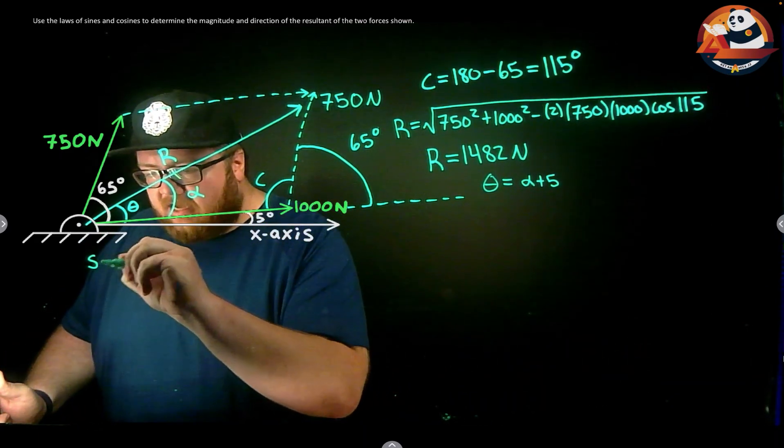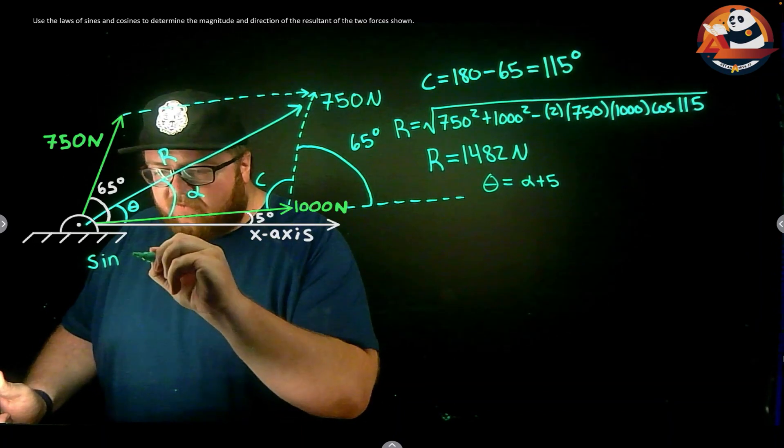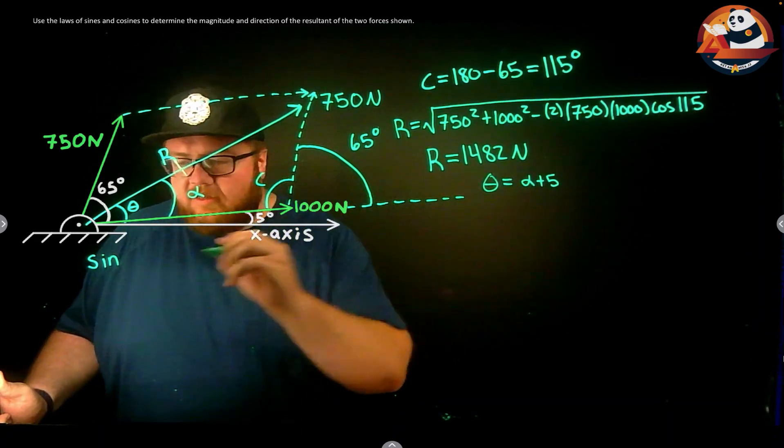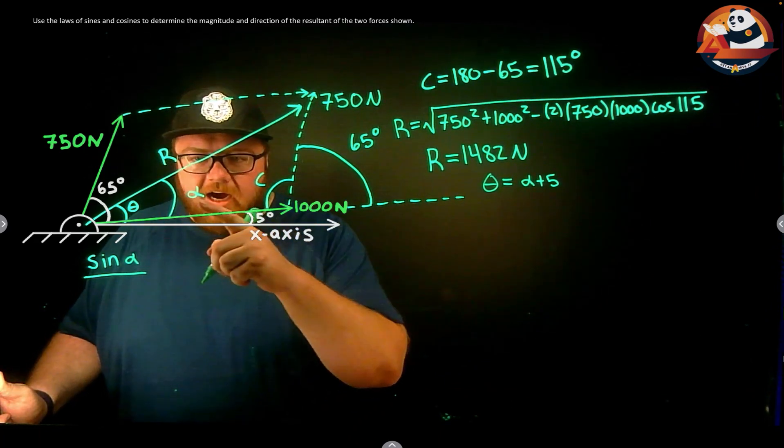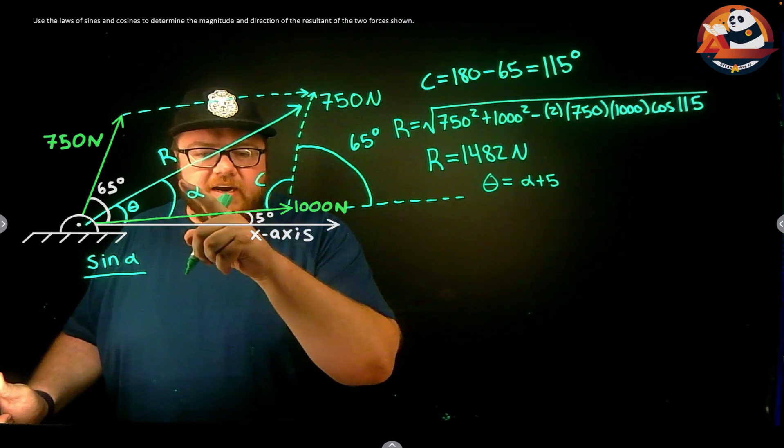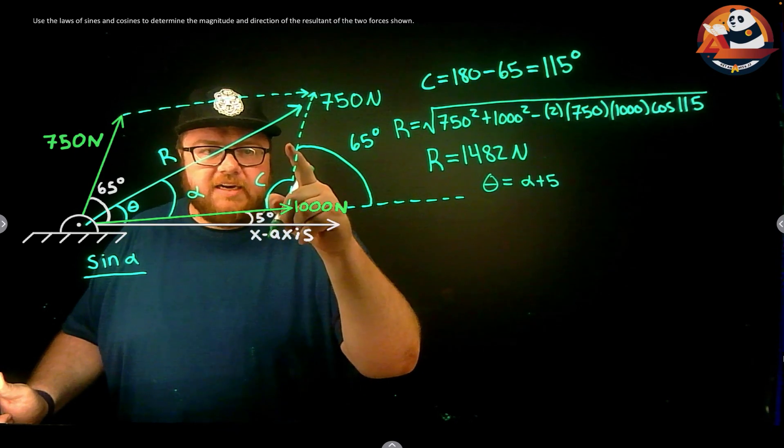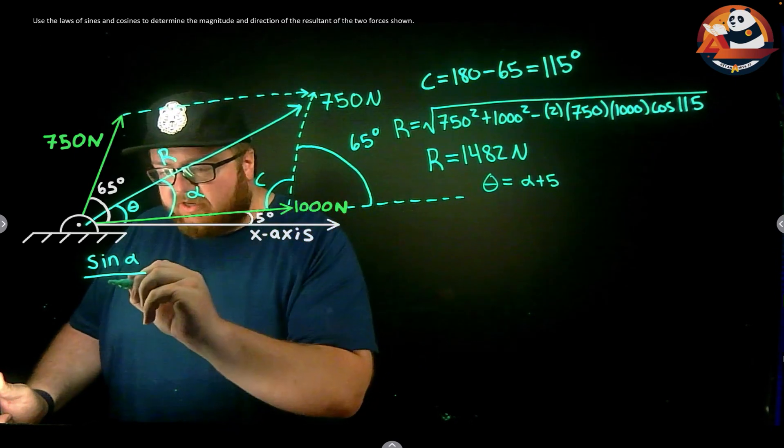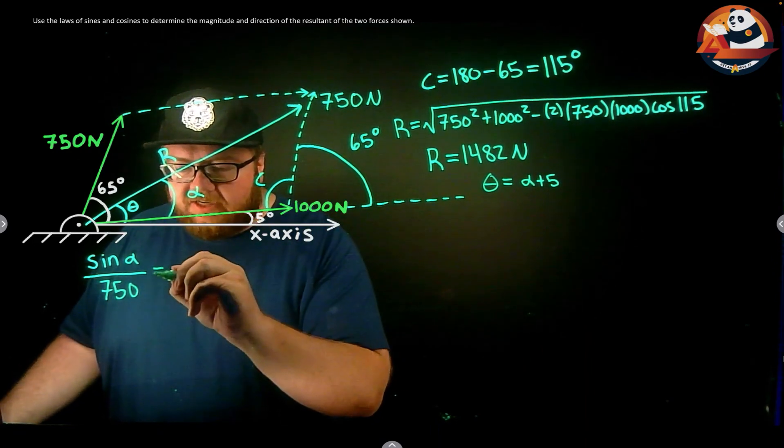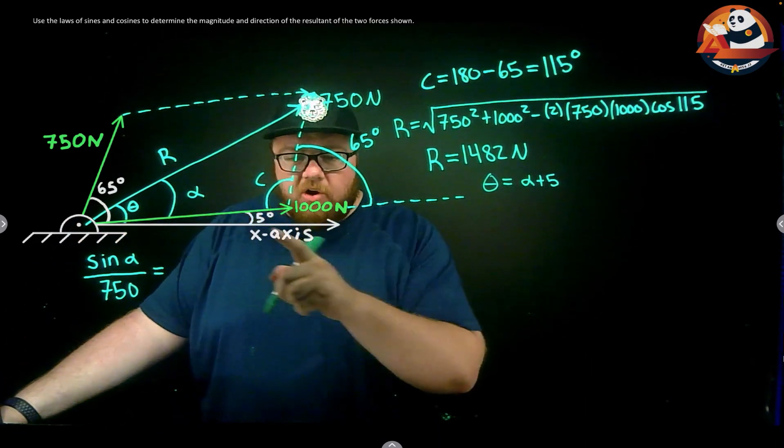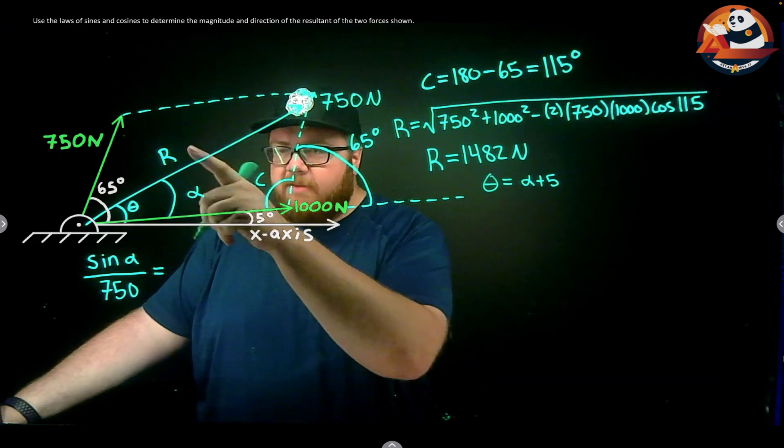I can say using the law of sines, the sine of one angle (sine of alpha, my unknown) divided by the side opposite it - if alpha is right here, going over the side it doesn't touch, it's 750 - over 750 should get me to, well, I know C and I know R.